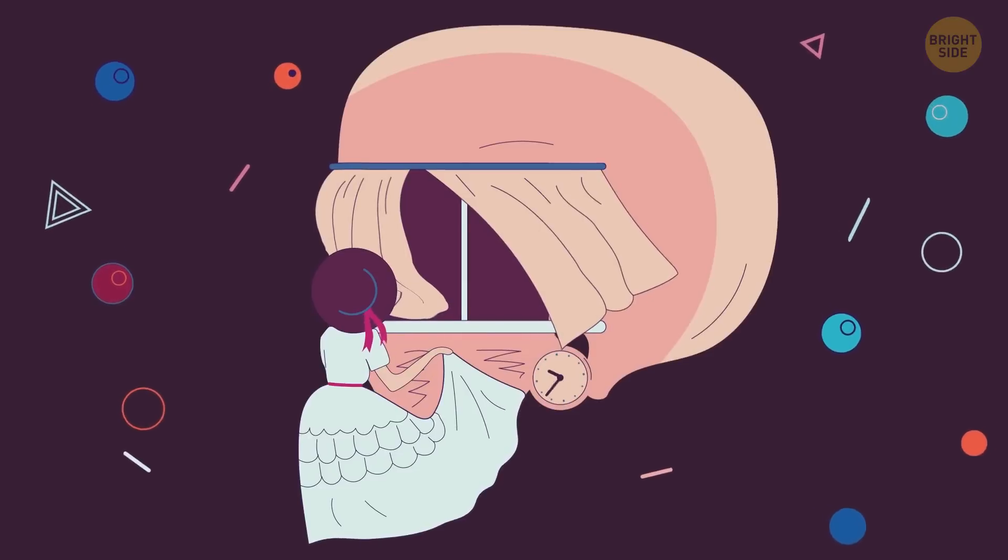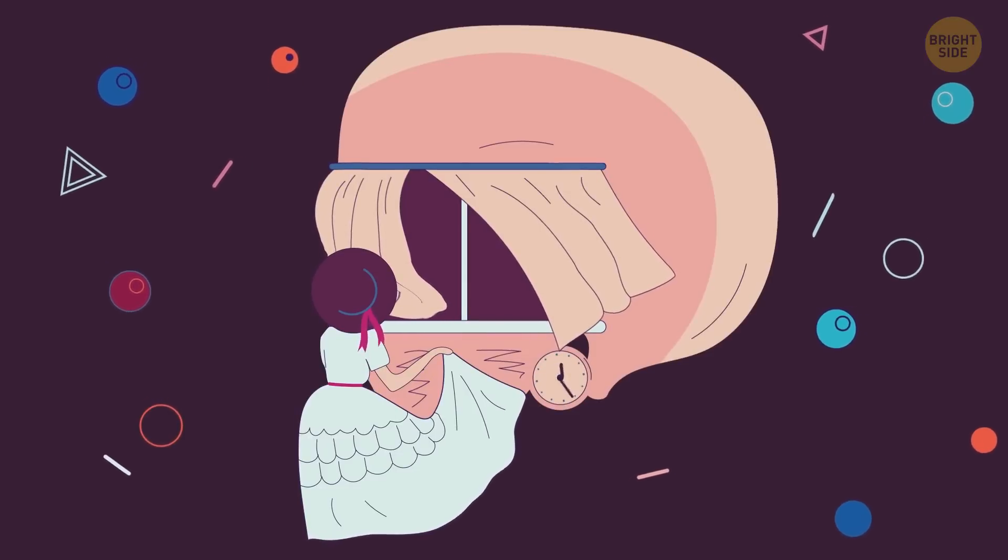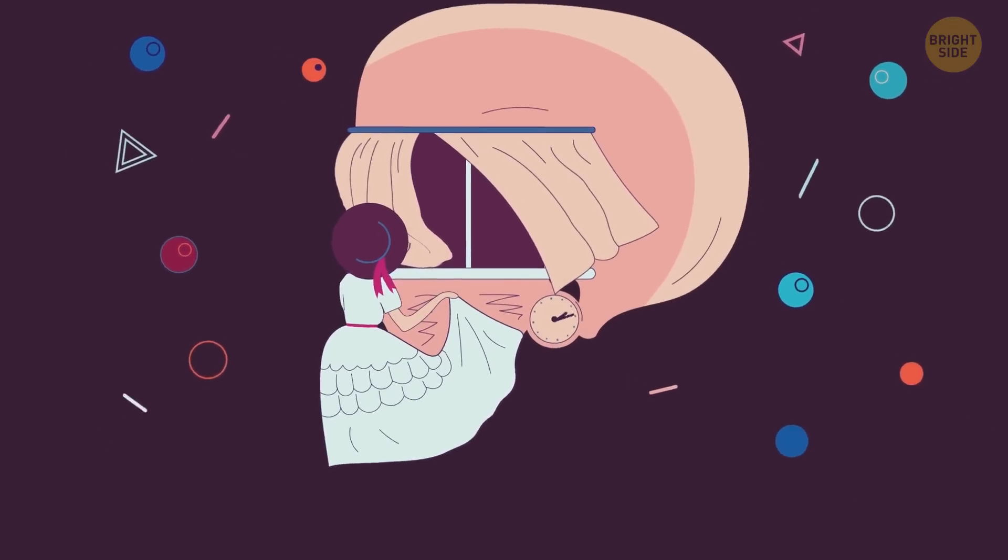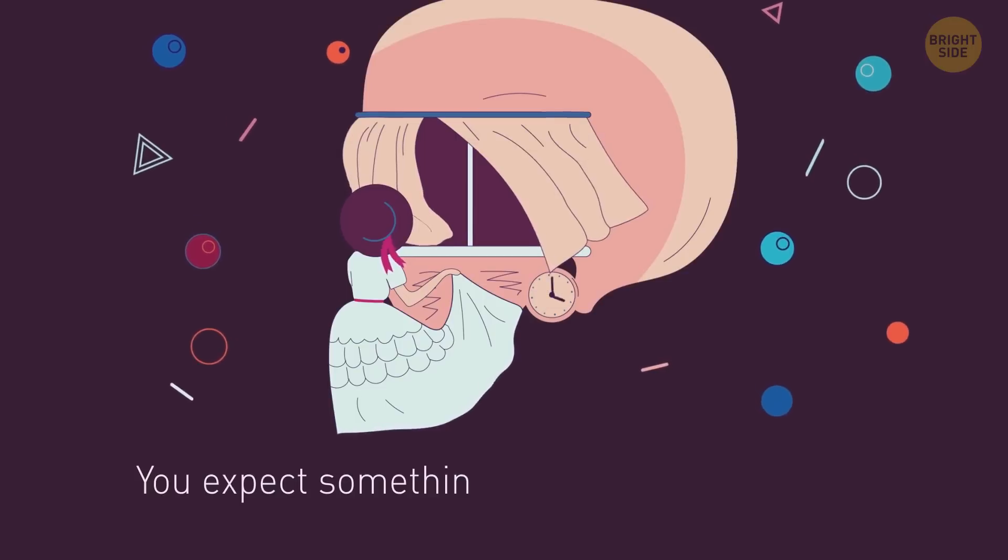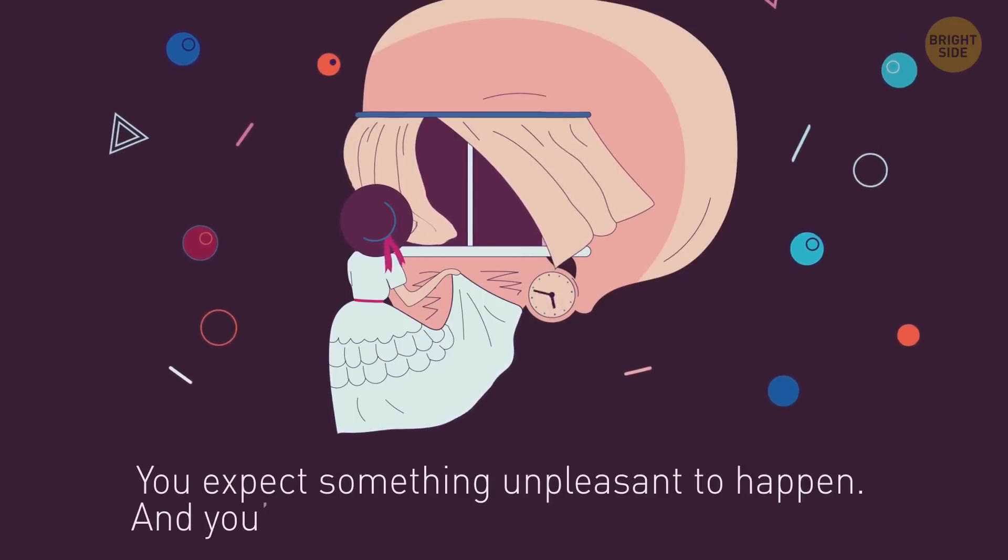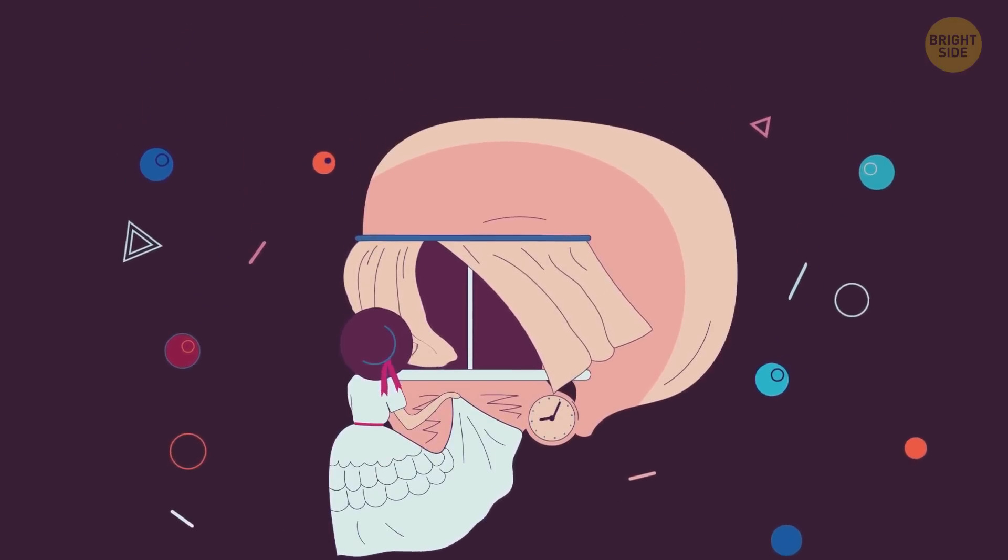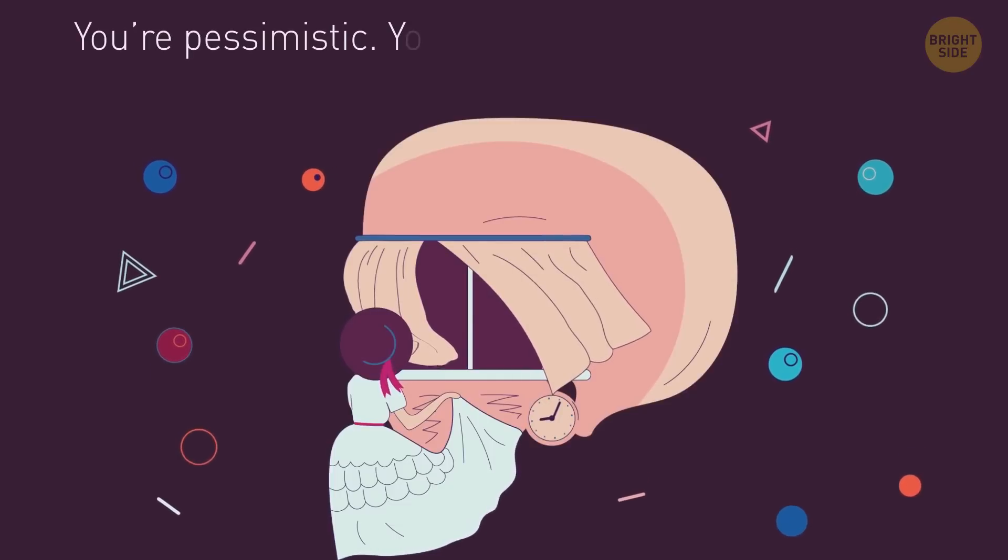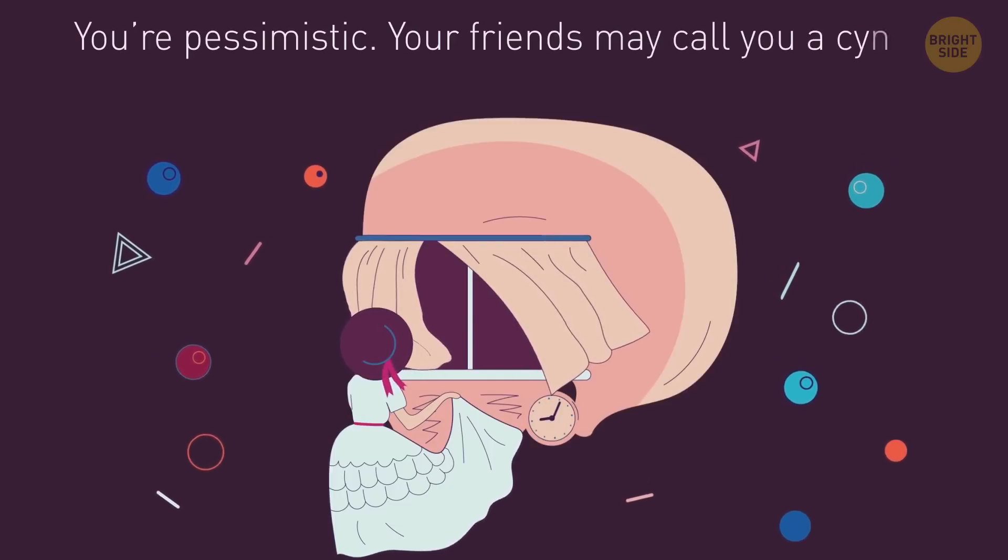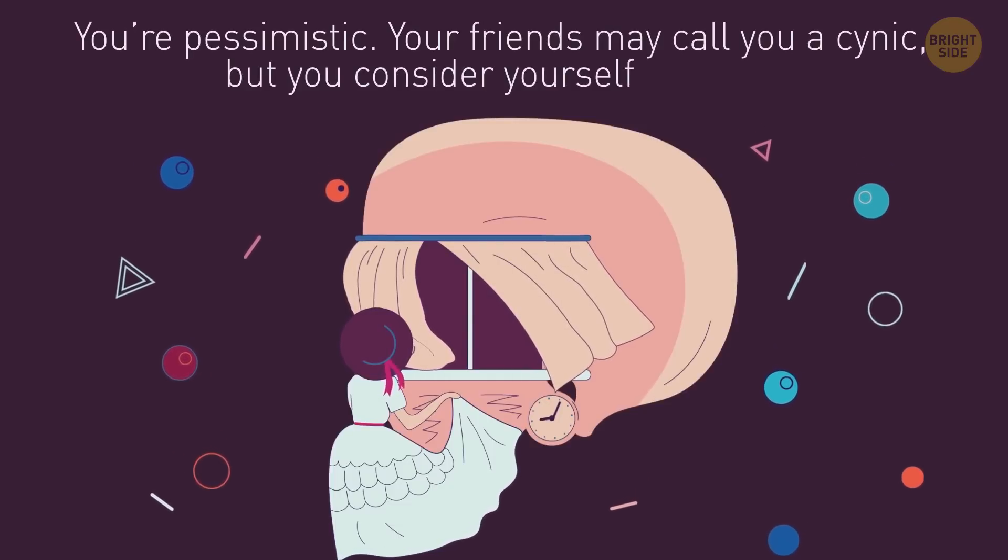The next illusion. If you see a girl at the window, then be careful. This may suggest that you expect something unpleasant to happen. And you're also probably an impulsive person. If you see a skull here, then you're pessimistic. Your friends may call you a cynic, but you consider yourself a realist.